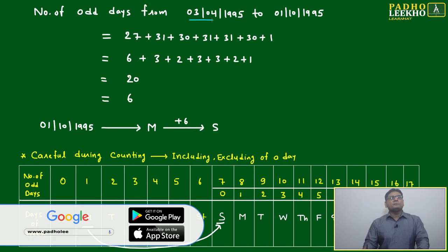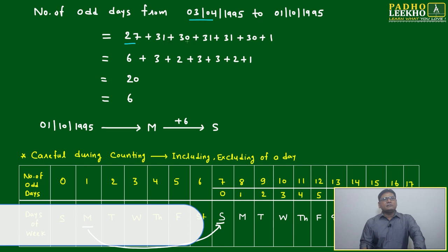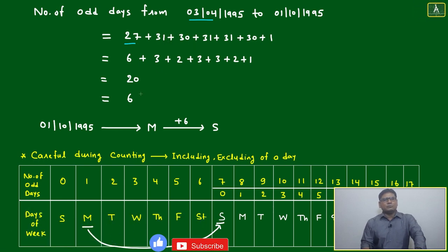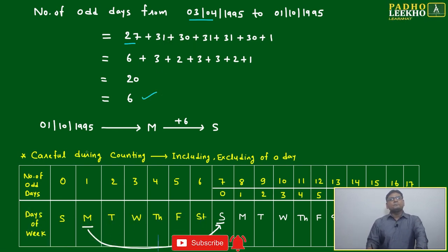Number of odd days from 3rd April 1995 to 1st October 1995. Here we can just write 27 plus 31 days. This we know - which is number of odd days. Finally, it is coming six, because 20 divided by seven, it will be six will be remainder.